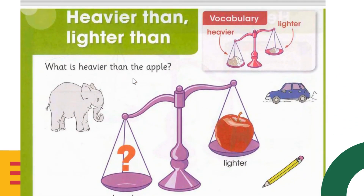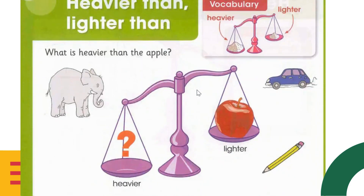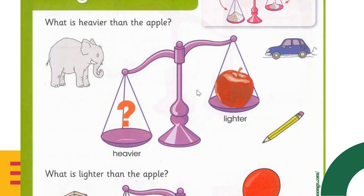Moving on to 'heavier than' and 'lighter than' — we should know how to calculate these. For example, the rice portion over here is more, so it is heavier, and this is lighter. We can tell that more rice is heavier than less rice.